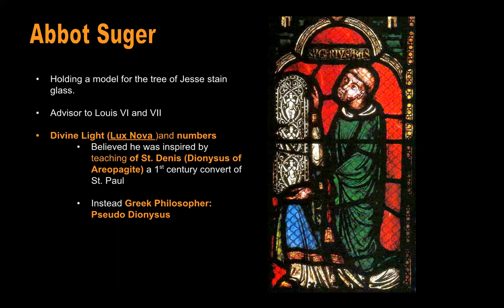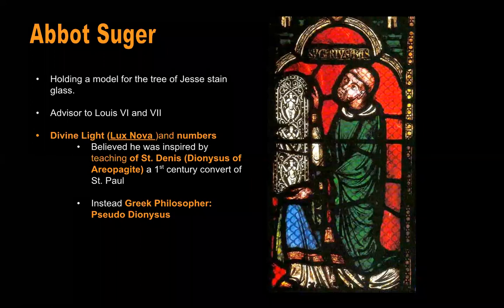Many stained glass windows — and you can see this at Chartres Cathedral — have a function of connecting the patron to the building. So often we see imagery of the patron: the French monarch, a religious figure like Abbot Suger, or anyone involved in the building's patronage. We'll see other functions of stained glass as well.